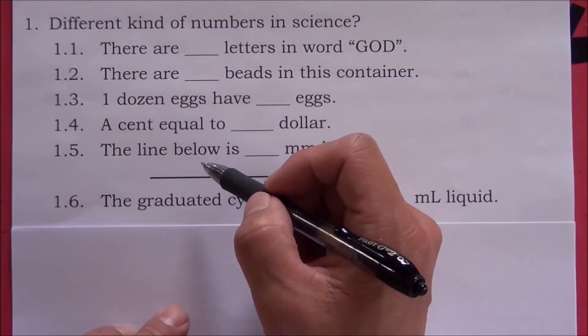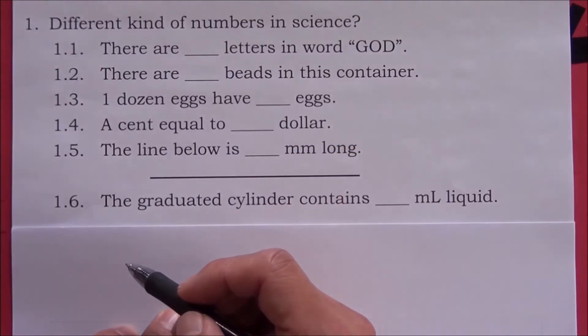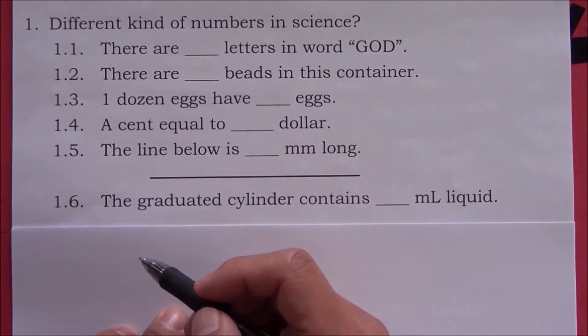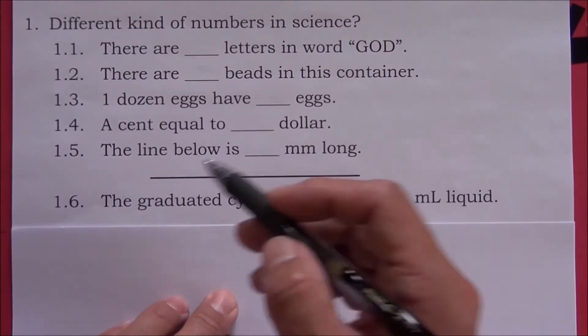The numbers in science are different than the numbers in mathematics. Why are they different? Let's see how the numbers in science are obtained. Let's look at six different examples.